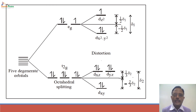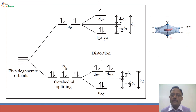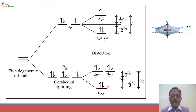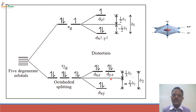The exactly opposite case occurs with compression along the Z axis. If the two ligands along Z are compressed, the energy of dx²-y² decreases while dz² increases in energy. As a result, two electrons occupy dx²-y² and there is net stabilization by a factor of -1/2 delta₁. In the T2G set, the dxy orbital decreases in energy while dxz and dyz orbitals increase in energy.